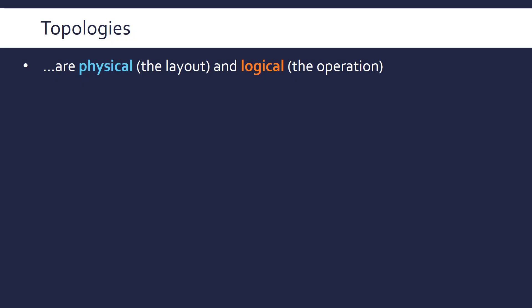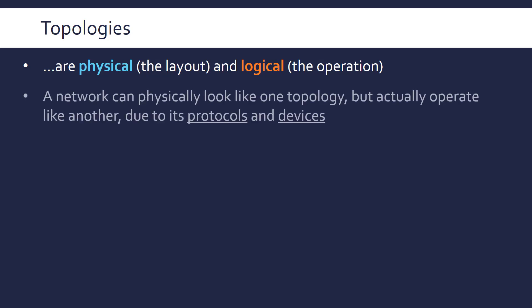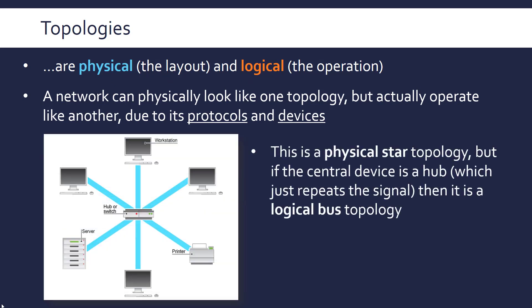Before we finish, let's go back to what I said at the beginning: topologies are both physical and logical. A physical topology is the actual layout — if you traced all the cables in the network and found they all go through a central device, then it's a physical star topology. Logical is about the actual operation, and that can be different. A network can have the same physical and logical topology, but because of the protocol it's running it can look like one network but behave like another — meaning it's got a different logical topology to its physical topology.